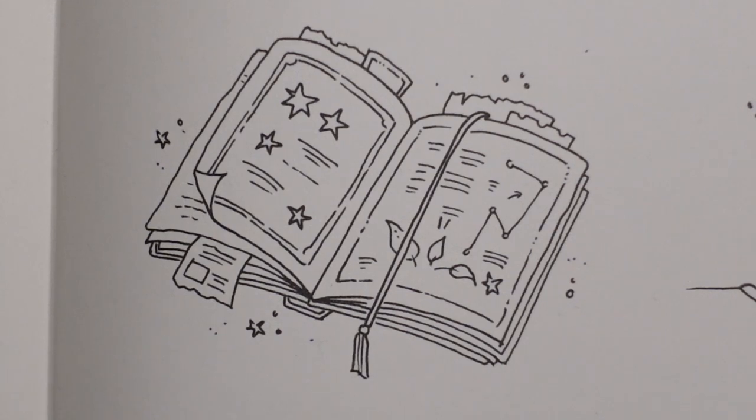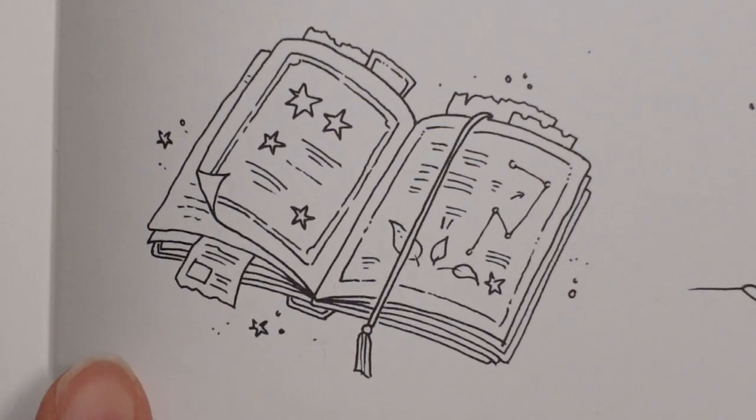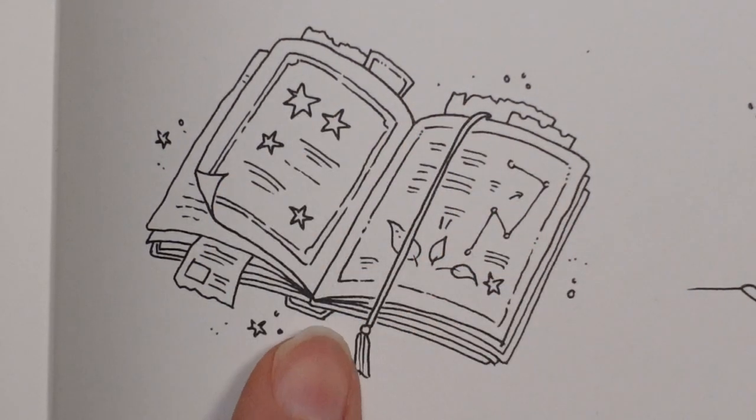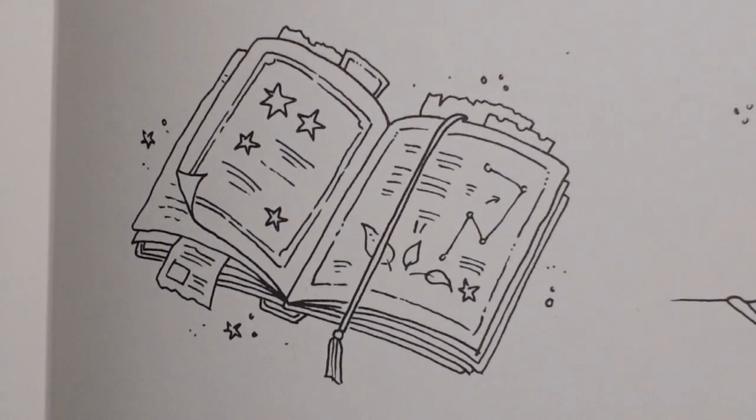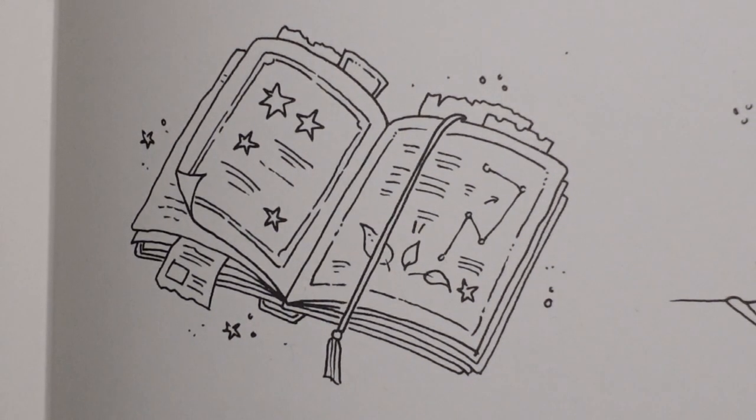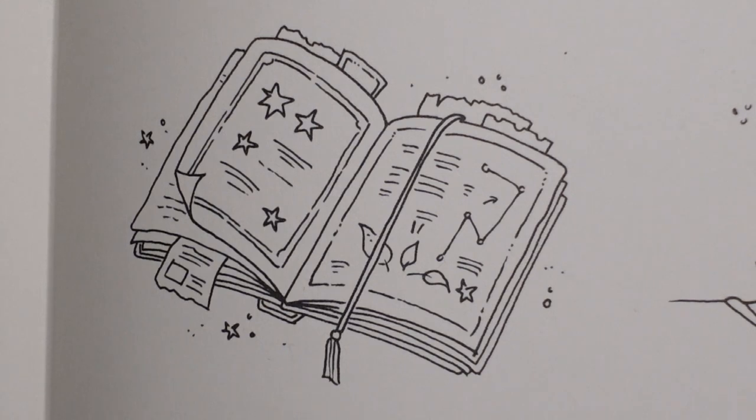I think what we'll do actually to start with is to color the pages of the book, the sort of plain paper and then we'll do all the little details after. Now I think I said when we were doing the parchment picture that I would normally do paper, pages, that sort of thing in a sort of brown ochre or green gold. So I'm going to do that today for you and show you that effect.